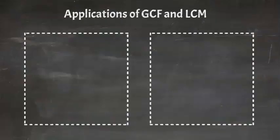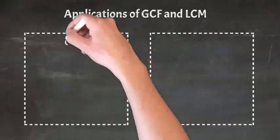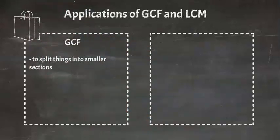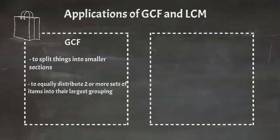There are specific instances which tell us to find the greatest common factor. Those instances include when you're trying to split things into smaller sections, to equally distribute two or more sets of items into their largest grouping, or to arrange something into rows or groups.